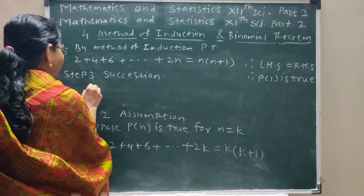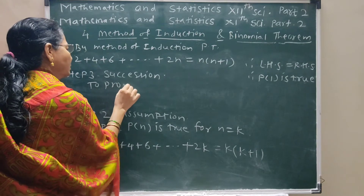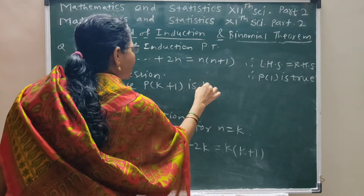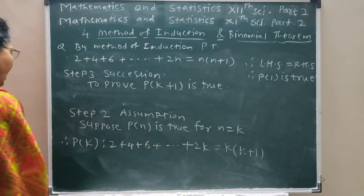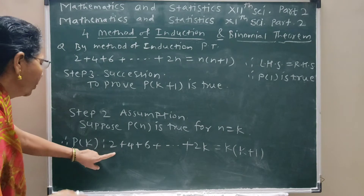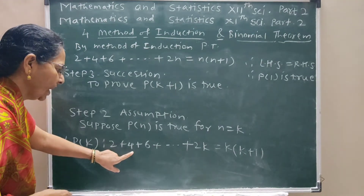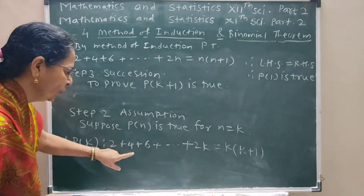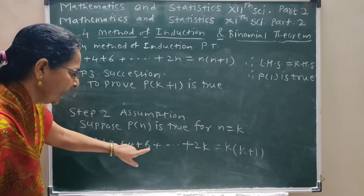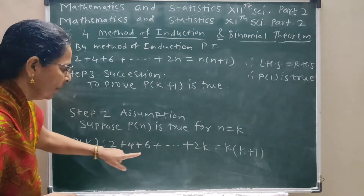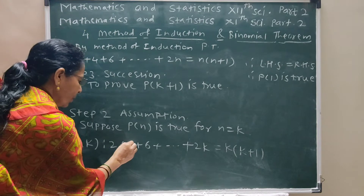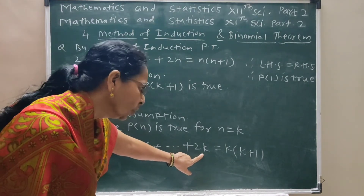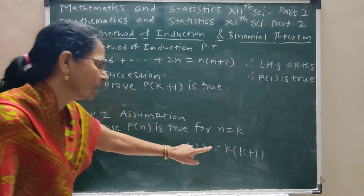Step 3: Induction. To prove P(k+1) is true. Every next term is obtained by adding 2 to the previous term. So the next term after 2k is 2k+2.